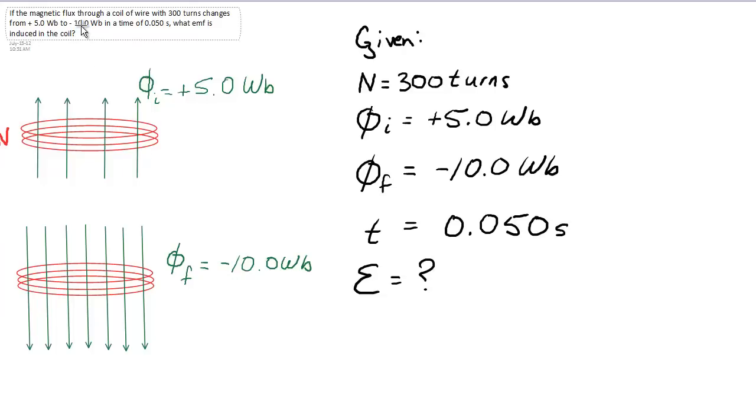Now the goal is to determine the induced EMF. So my given information I've listed off on the right-hand side. N is 300 turns. Our initial flux is positive 5 Webers. Final flux is negative 10 Webers. Time it takes to change that value is 0.050 seconds. What is the induced EMF?